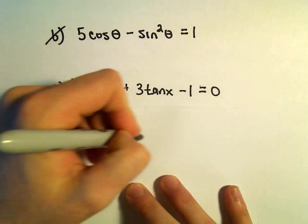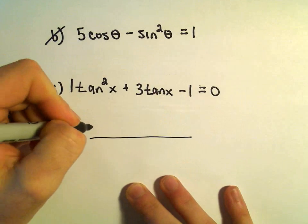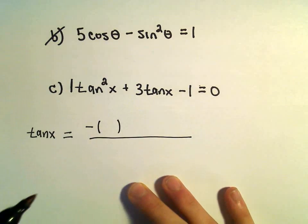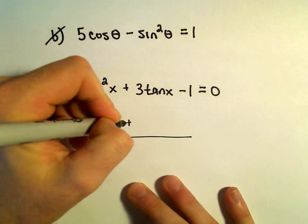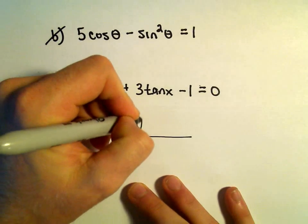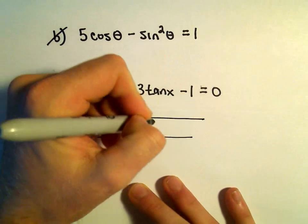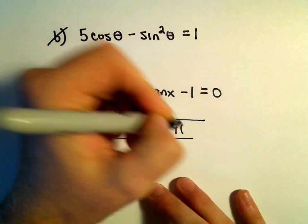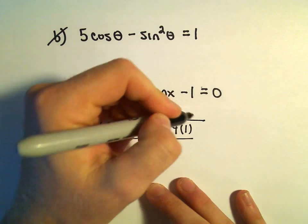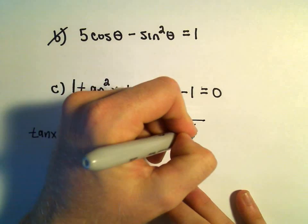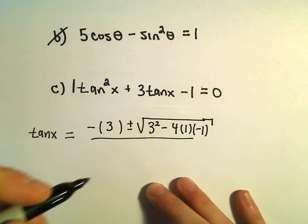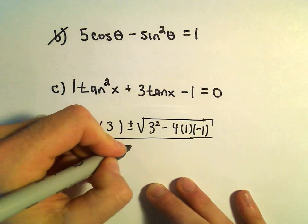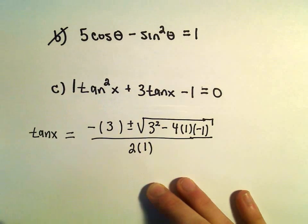So we've got tangent of x equals negative our b value, which is just going to be positive 3, plus or minus the square root of b squared, minus 4 times a — which is 1 — times c, which is negative 1, all over 2 times a.